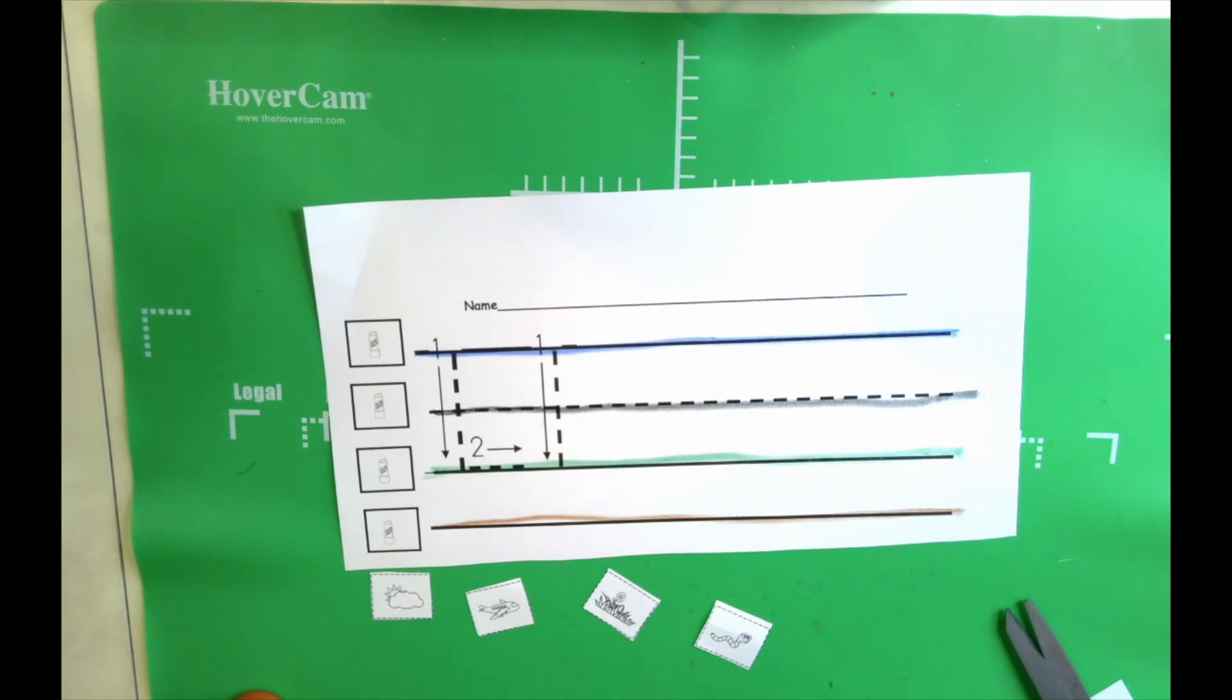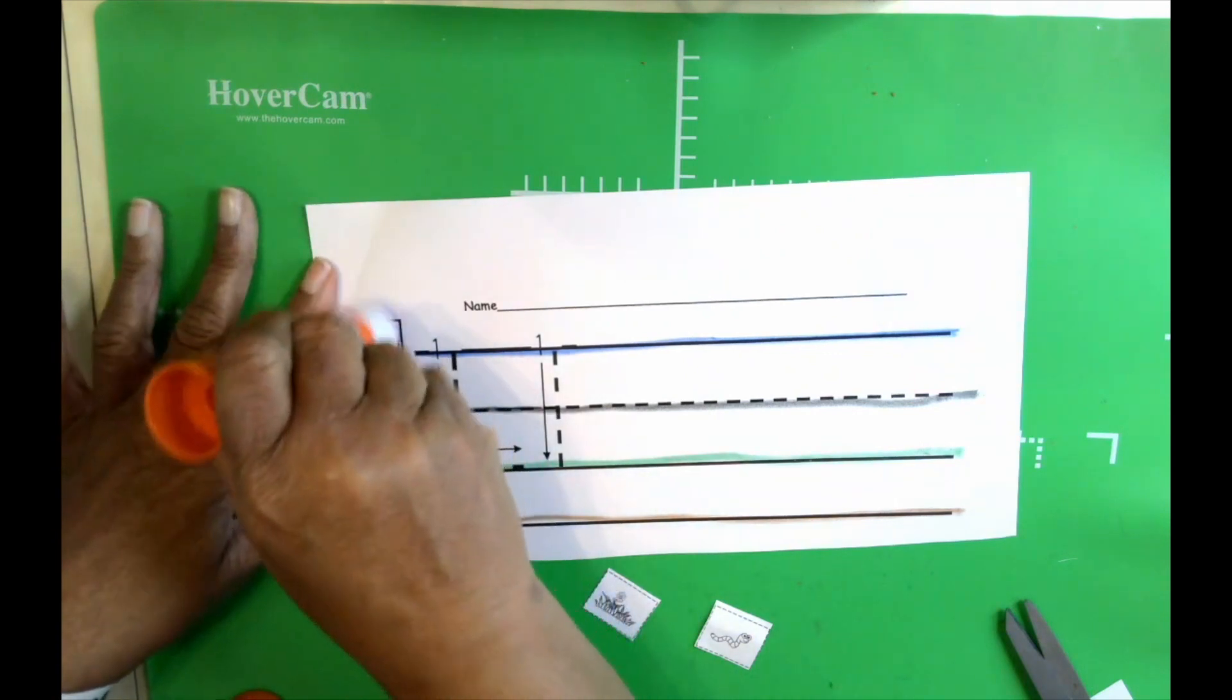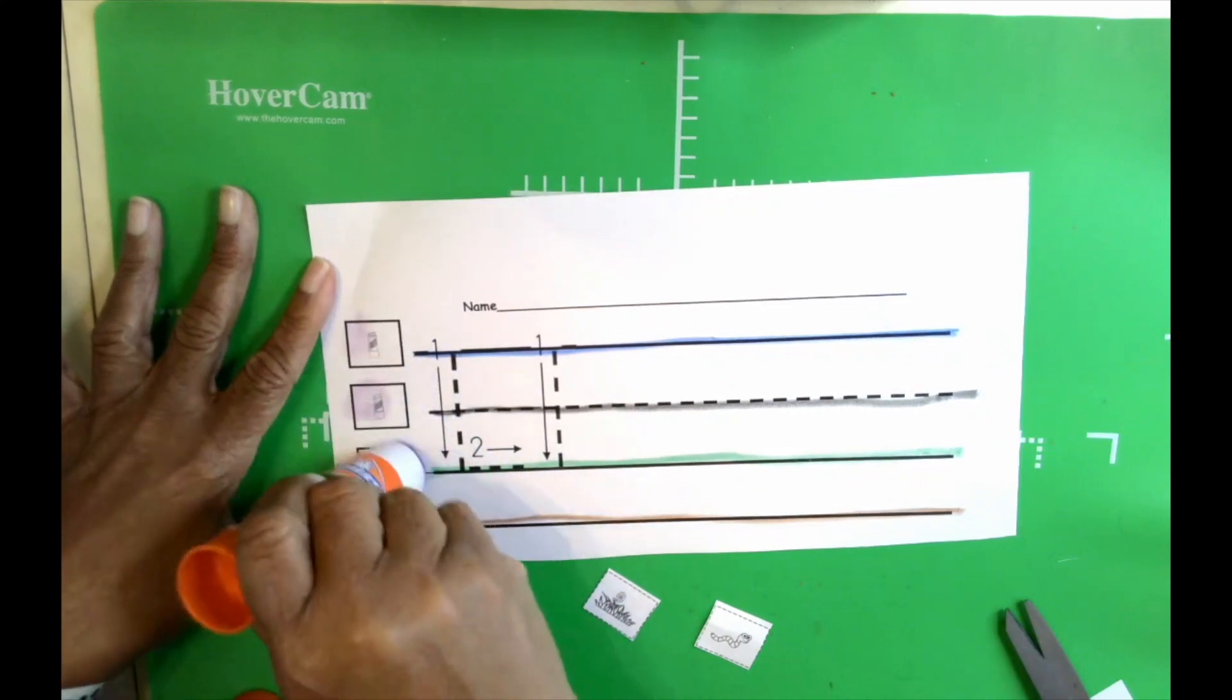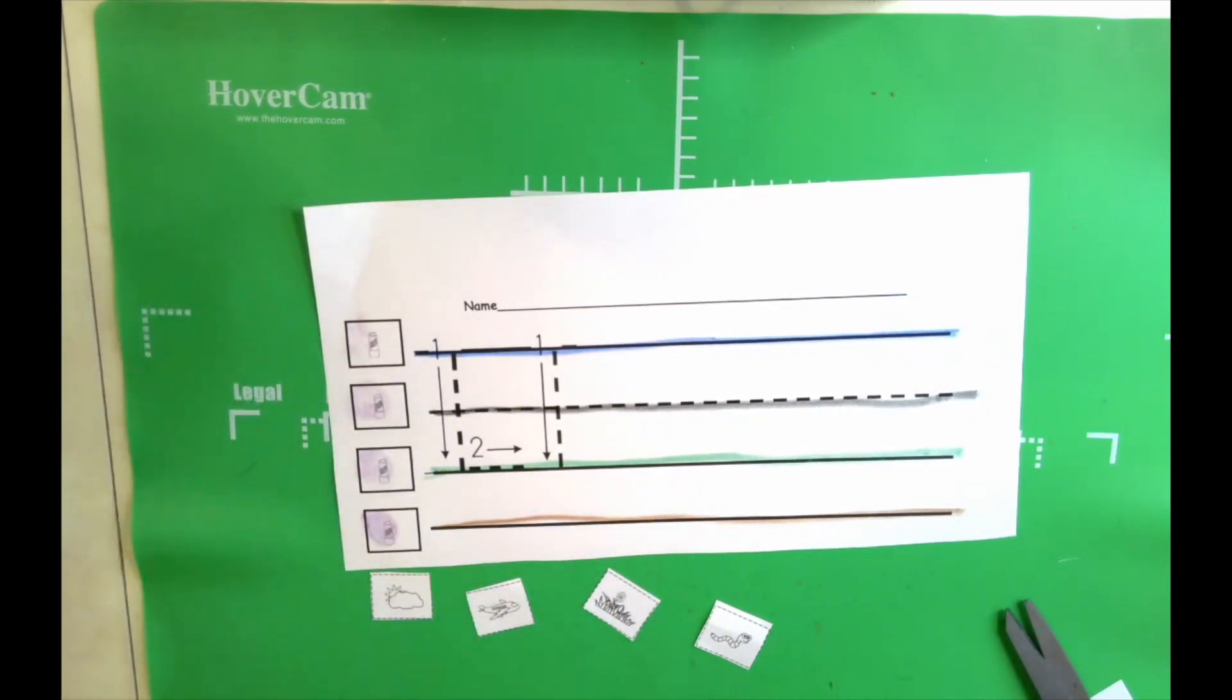Okay, and we're not going to use much glue, boys and girls. It doesn't take much. Just one swirl, a couple of swirls. And that's it. Don't forget to put the glue top back on your glue stick.